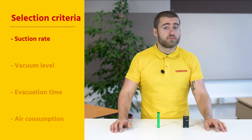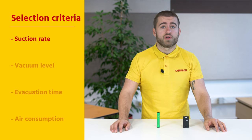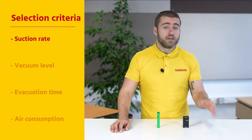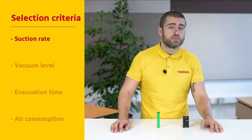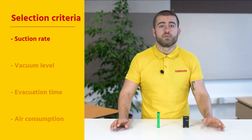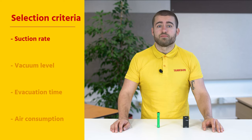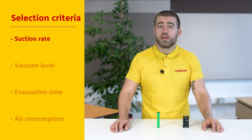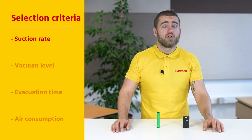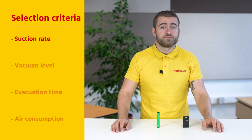When selecting a vacuum generator, it is important to take the following criteria into account. The suction rate is usually defined in cubic meters per hour or liters per minute. The maximum suction rate is defined as the maximum flow rate that the vacuum generator evacuates from the environment, and this is free flow, so the flow rate is different when something is picked up.